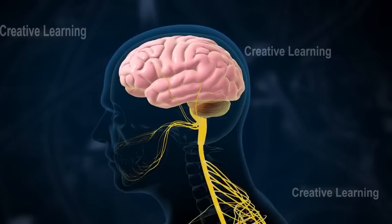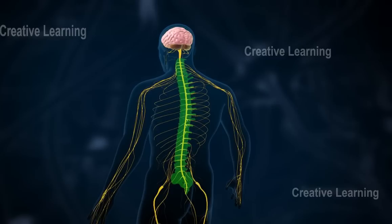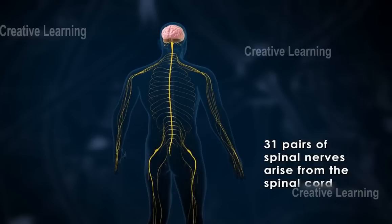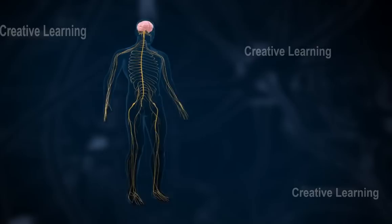The spinal cord extends from the medulla oblongata and down the back. It is protected by the vertebral column. The spinal cord is a hollow tube containing cerebrospinal fluid. Thirty-one pairs of spinal nerves arise from the spinal cord. These nerves transmit information from body organs to the brain and from the brain to the organs.